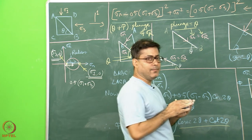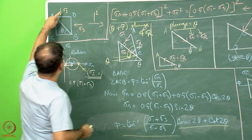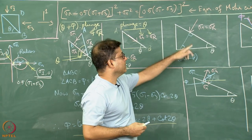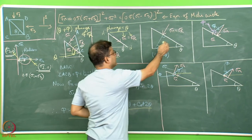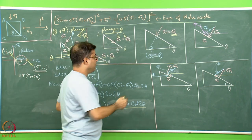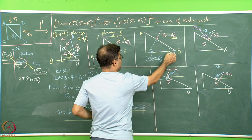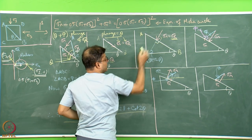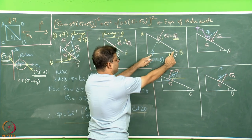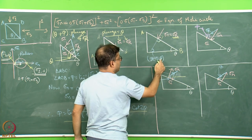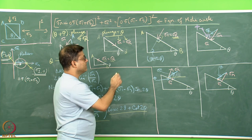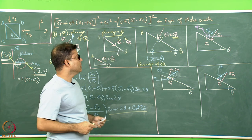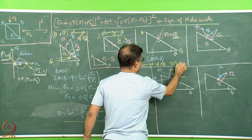Taking a third example: if sigma 1 equals sigma 3, the shear stress component cancels out through the equations, and only sigma N acts. Sigma N itself is then the resultant stress on the AB plane. Since sigma N is perpendicular to the plane and the plane dips at theta, the perpendicular to a line dipping at theta makes an angle of (90° − theta) with the horizontal. Therefore, the plunge of sigma R in this case is 90° − theta.